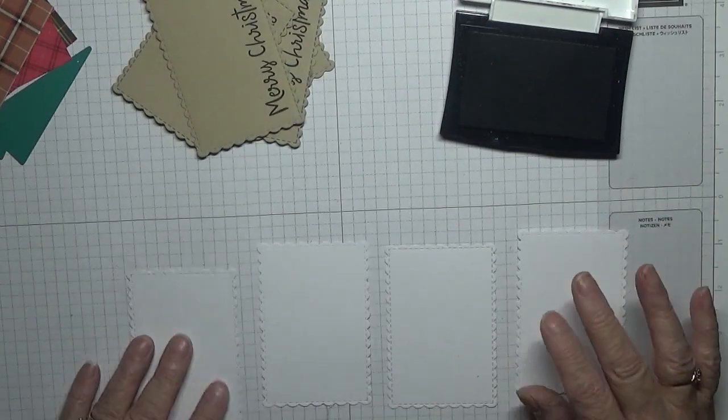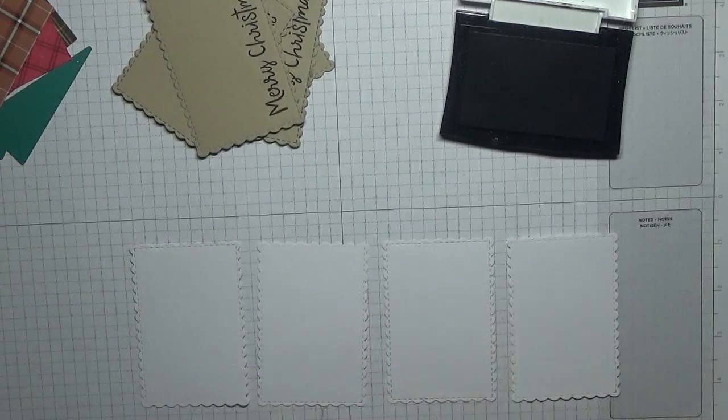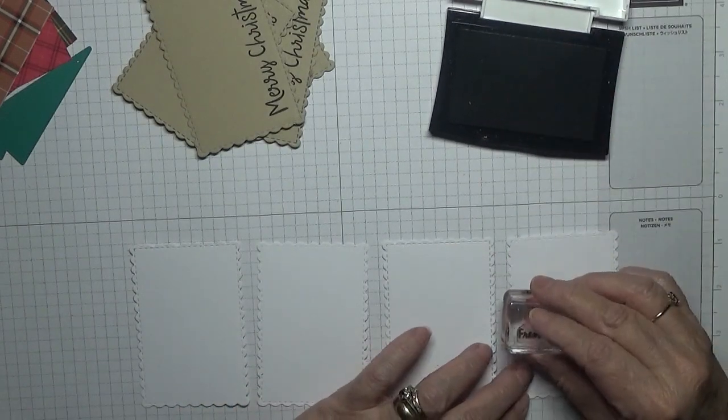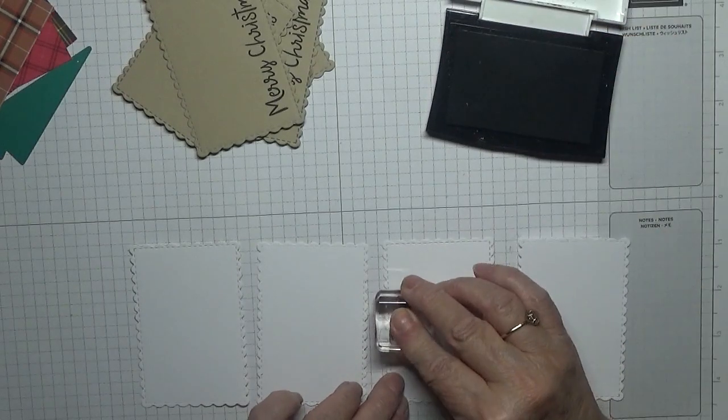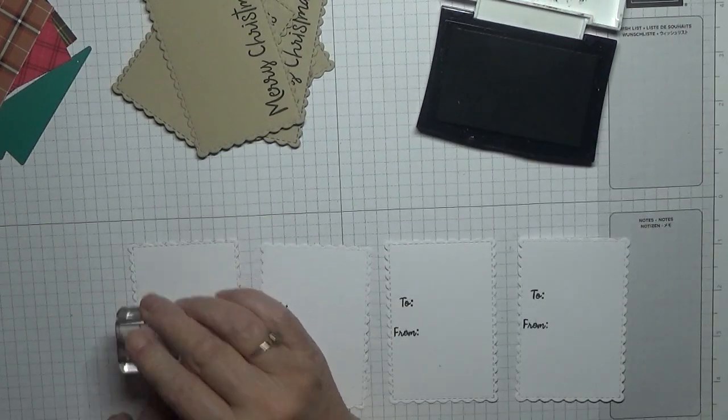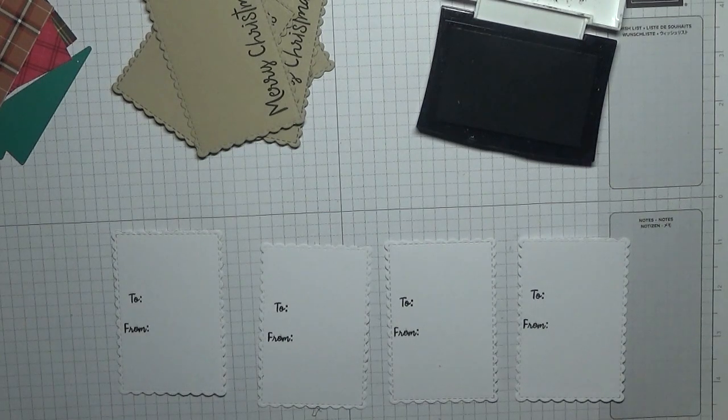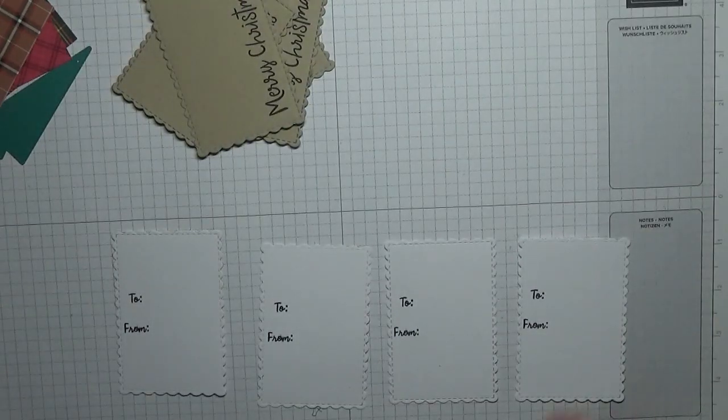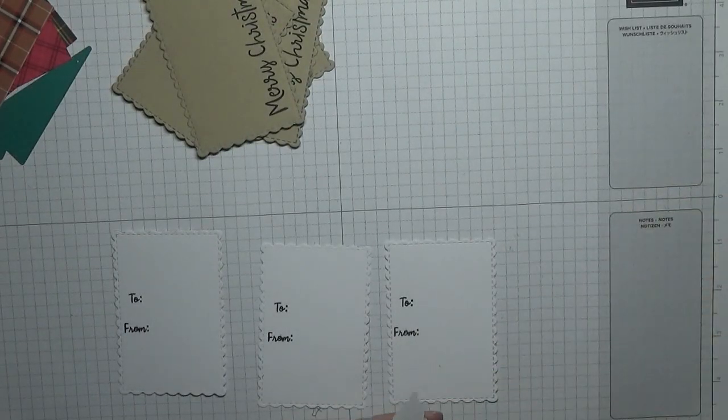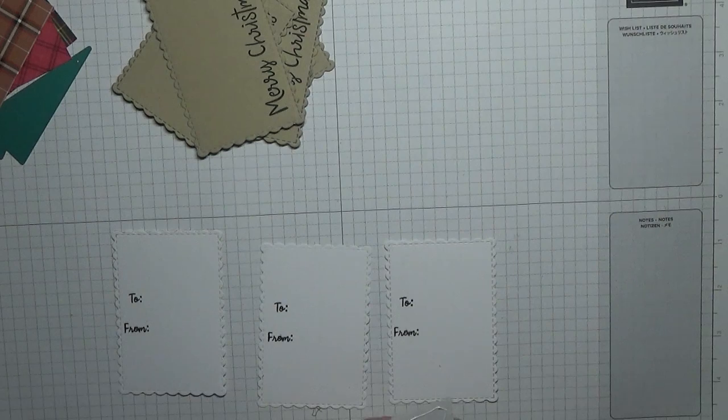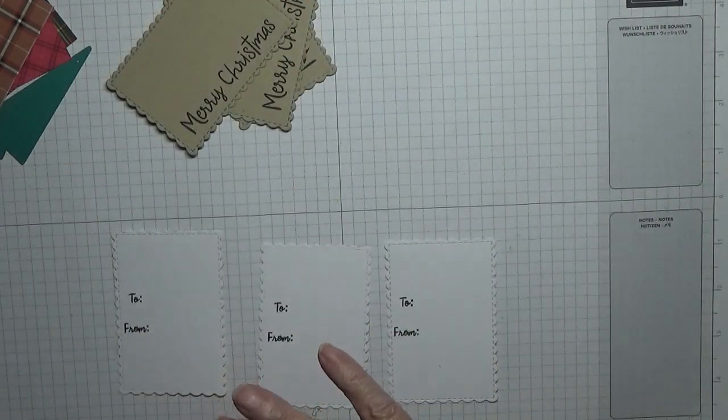Alright, these, making sure we've got the right sides, we're going to stamp our to and from on them, and just put to and from to the left of it, like that. That's our stamping done. Get rid of that. Now what we're going to do is stick these on the back of our crumb cake, like that.